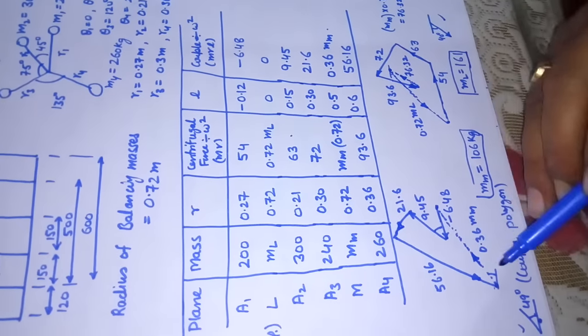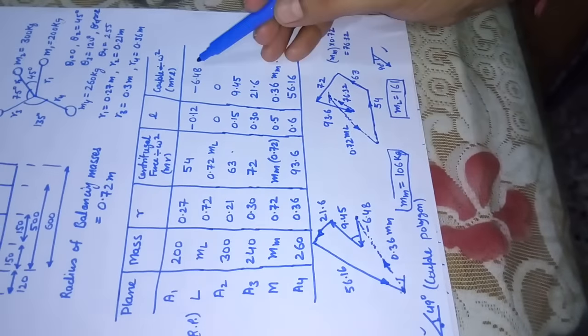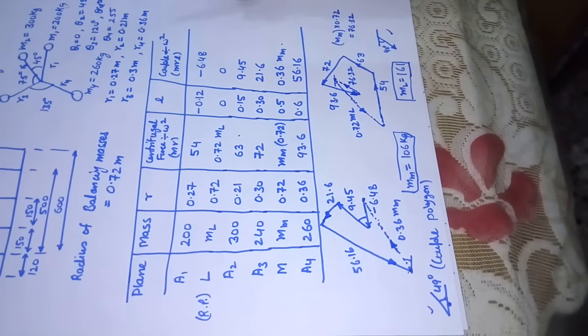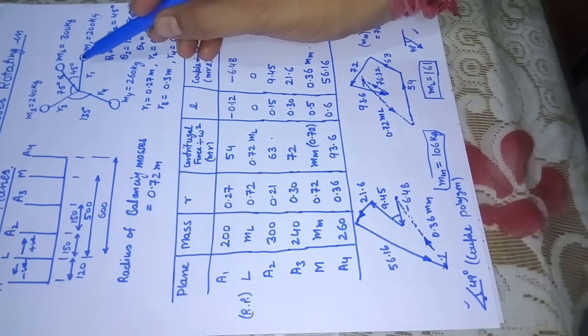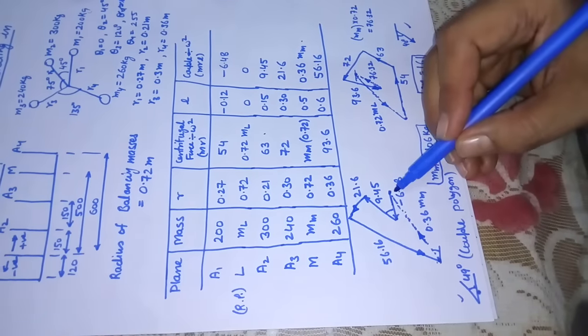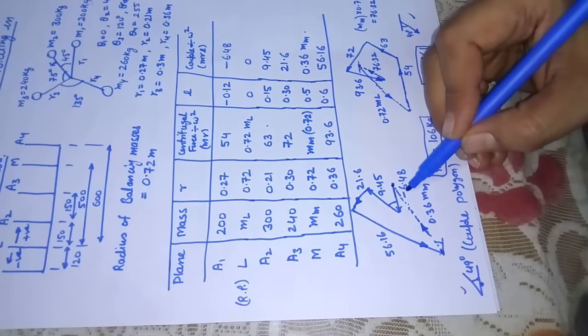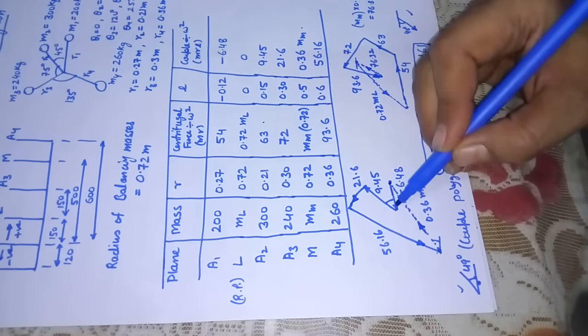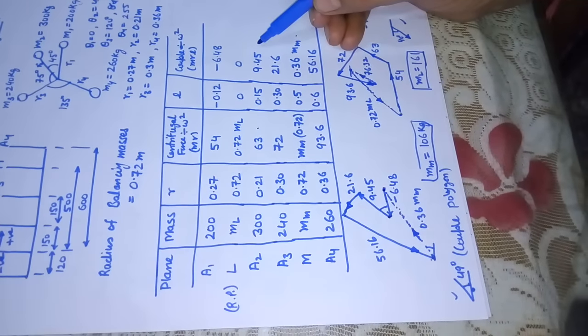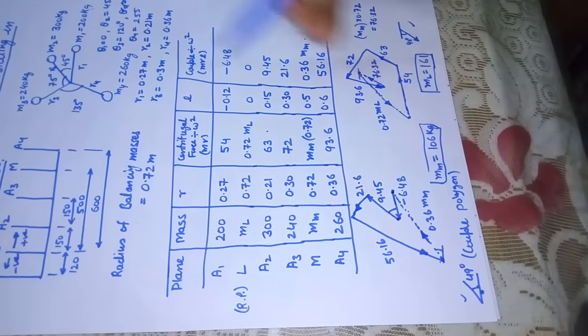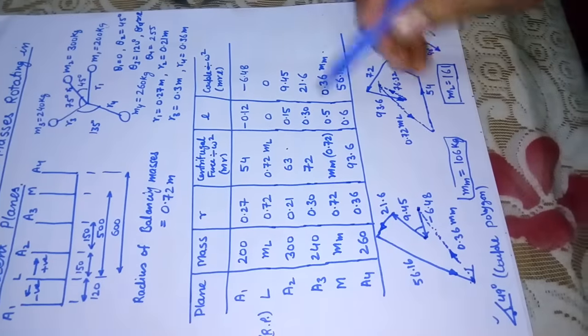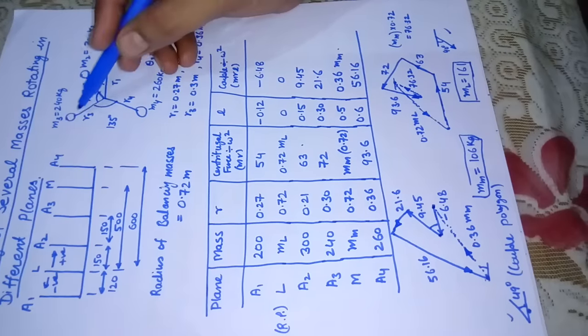The couple polygon is shown here. First of all, we have drawn minus 6.48. It is interesting how to take minus. This direction is positive, so if I am taking negative, the arrow should be towards the horizon. We have taken a suitable scale and started the diagram. We have made minus 6.48 like this, it is negative. Positive would have been in this direction. Then where this finishes, I'll start the next couple, that is 9.45, parallel to m2 direction.